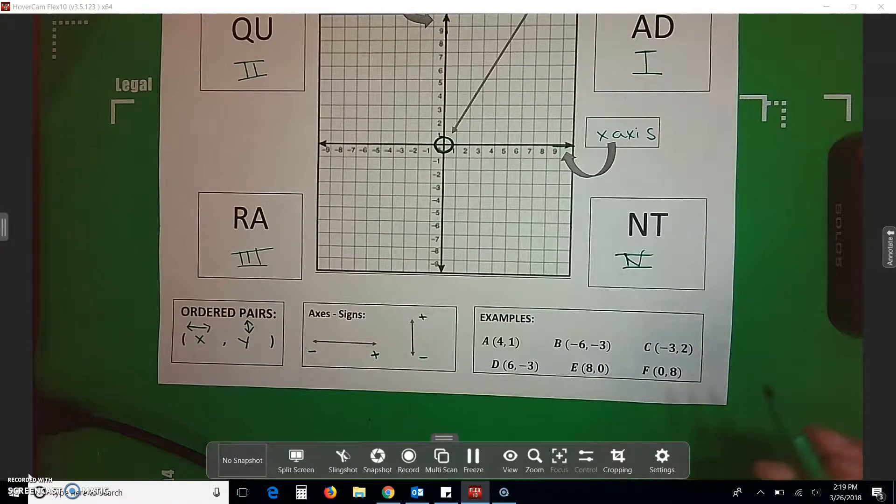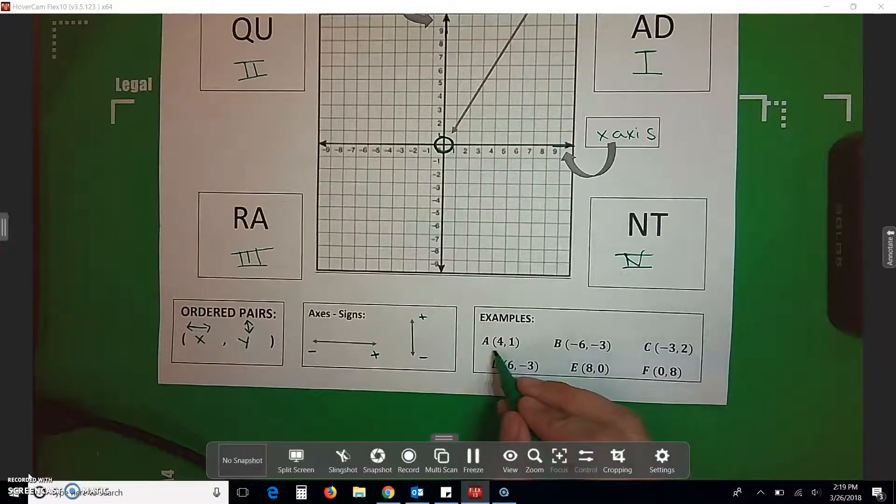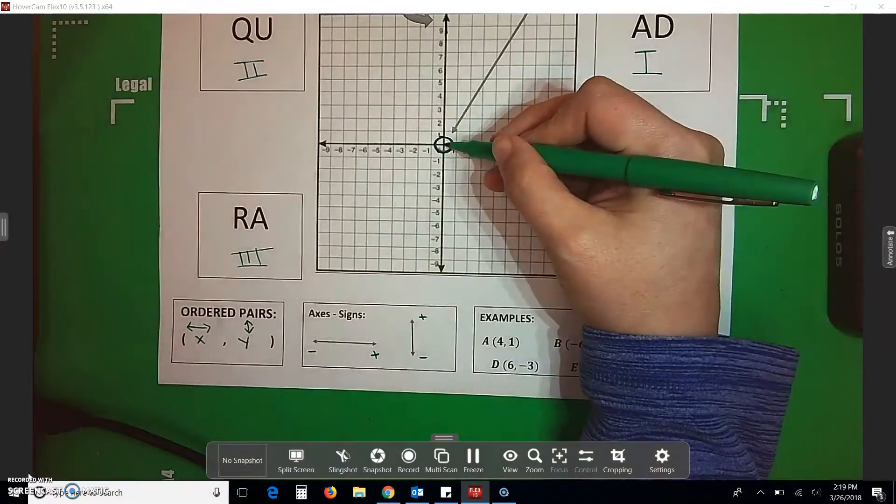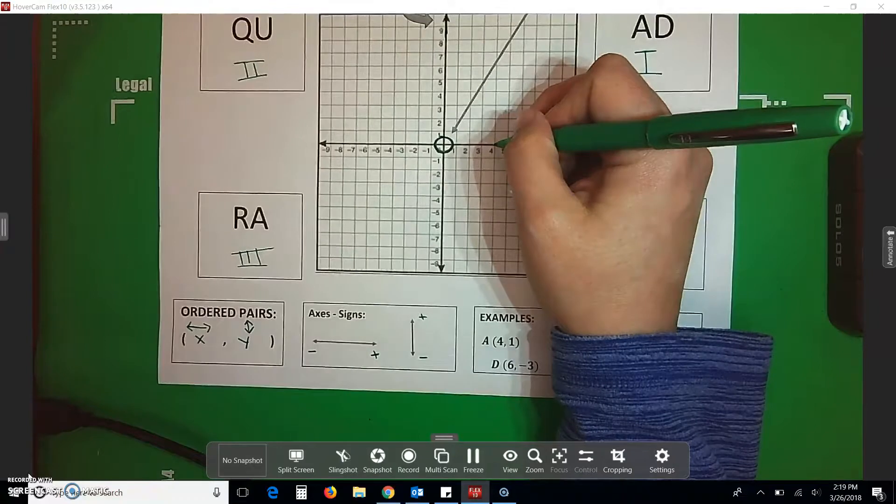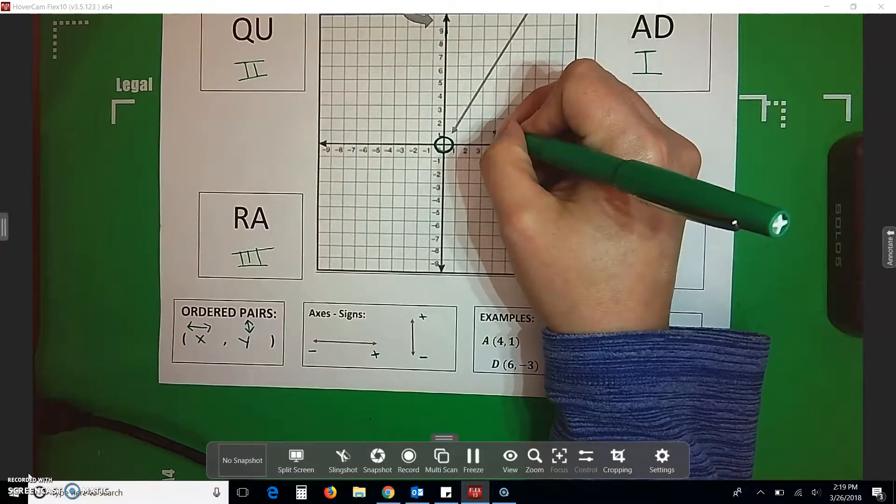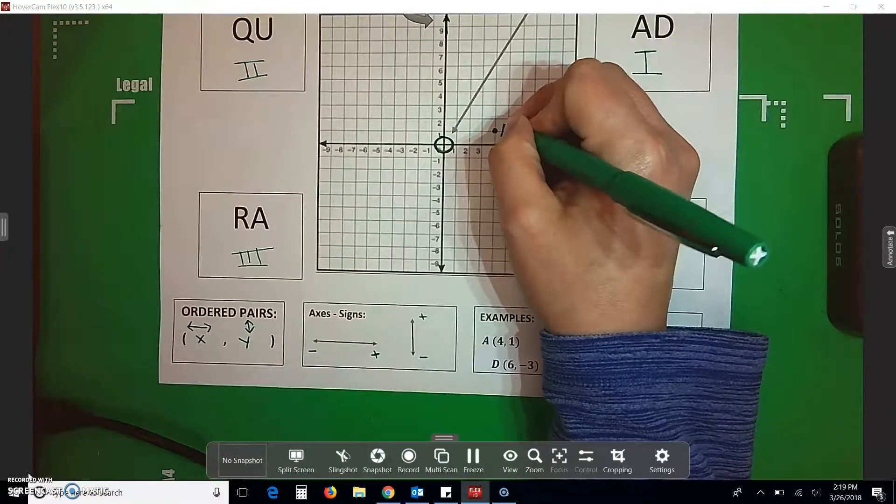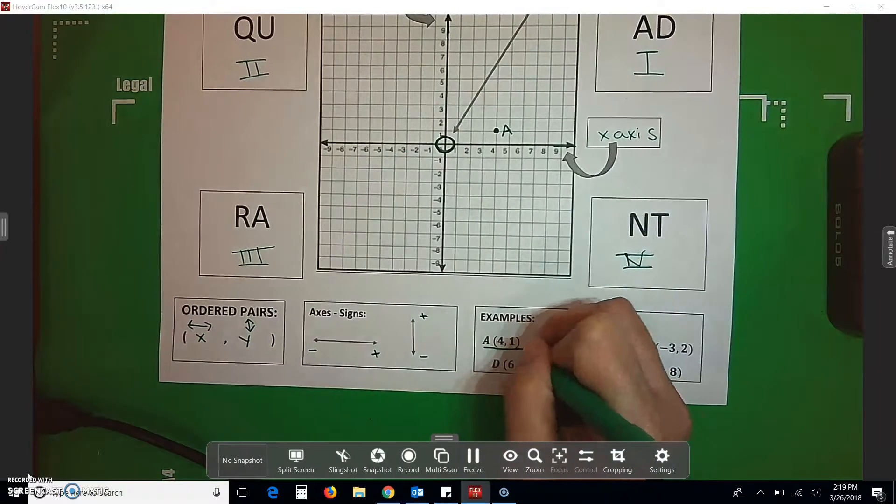Then we're going to put some examples up here. So, 4, 1. We're going to go left to right first. And 4 positive is this way. And a positive 1 is up. So, that is going to be point A.